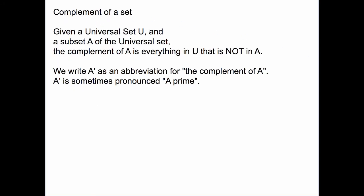The complement of a set is defined as follows. If you have a universal set and a subset A of that, then the complement of A is everything in the universe that's not in A. We write it as A-prime as an abbreviation for the complement of A.